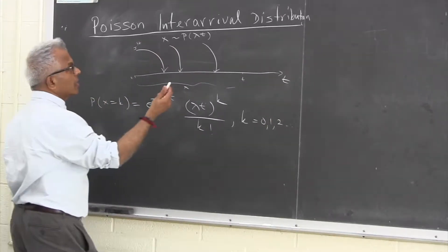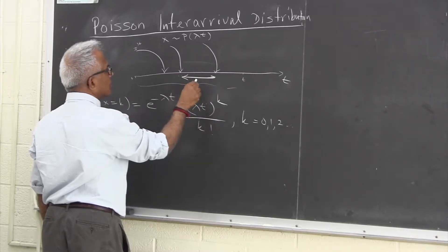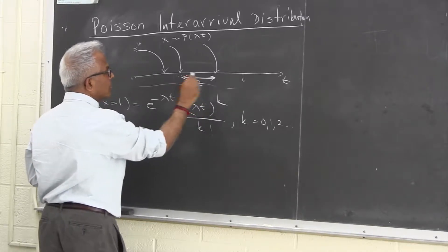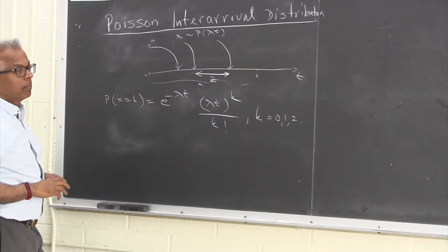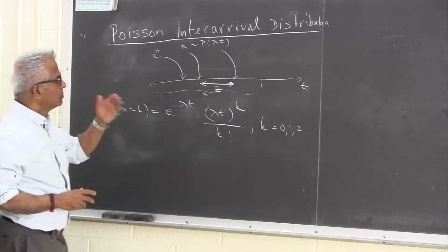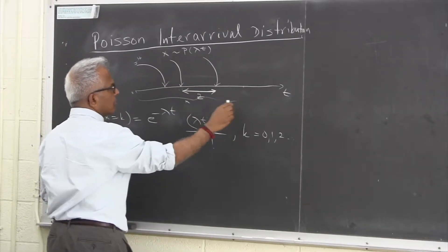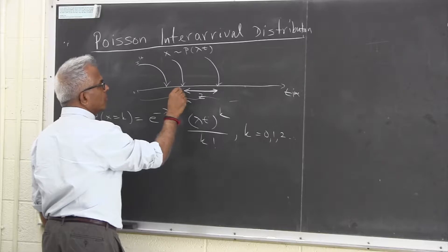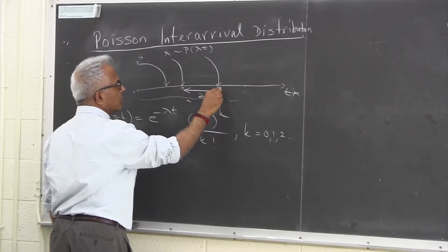By inter-arrival distribution, we mean the duration between consecutive arrivals — of course this is going to be a random variable. So we want to find the pdf, the distribution function or the density function of that random variable. This is a generic time, so if I denote this to be some tau and this to be tau plus t.